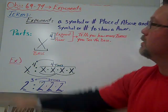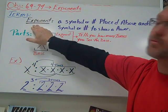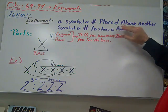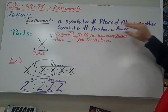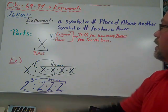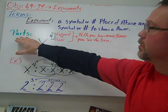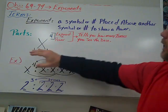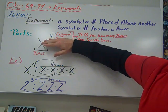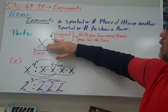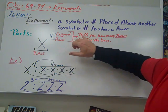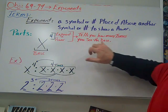We'll start with some terms. The first one is exponent, a symbol or a number placed above another symbol or a number to show a power. When we look at this, the parts are going to be the bigger number is our base. The raised symbol or number is our power, also referred to as an exponent. And that tells you how many times you see the base.